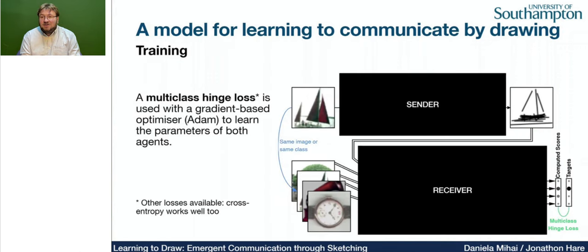During training, we use the Adam Optimizer and train the entire system end-to-end. All experiments in the paper used a multi-class hinge loss; however, we have also done experiments with categorical cross-entropy and found that it works just as well.